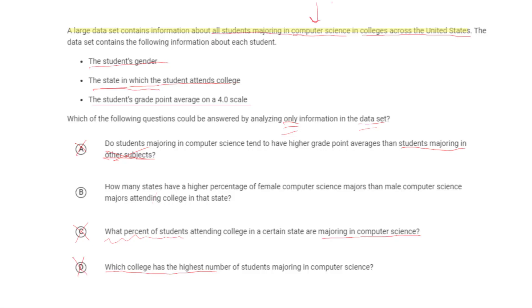The answer is B: how many states have a higher percentage of female computer science majors. Even without explicit percentage data, we can compare which states have more female students than male students in CS. We have information about the state, the gender, and whether they're in computer science. So we actually have all the information needed. The answer is B, though it is a little tricky — these problems require investigative detective work.